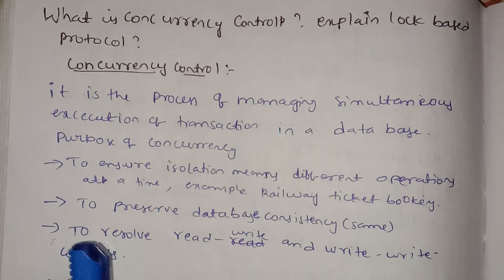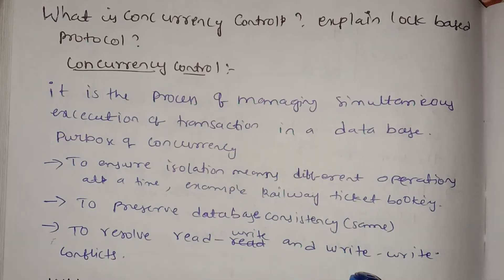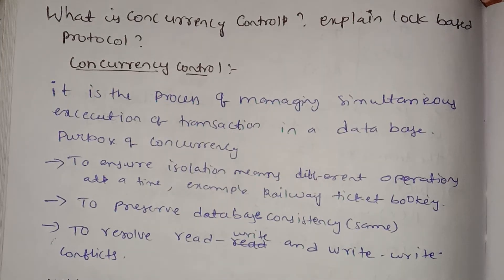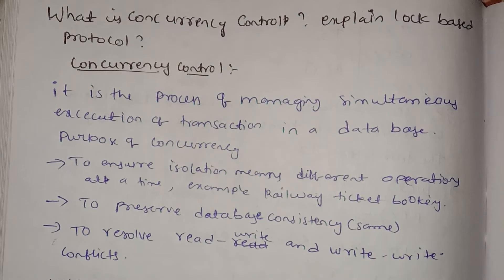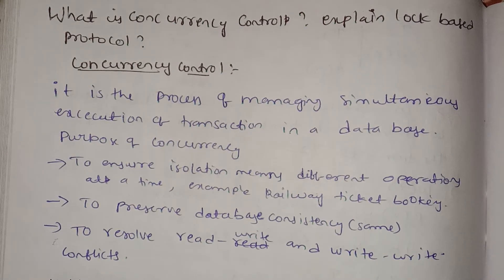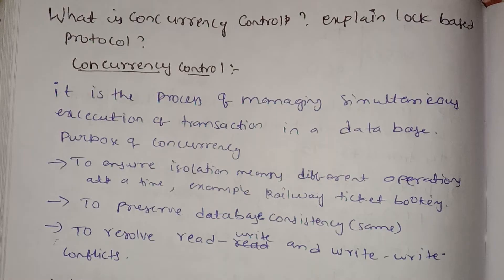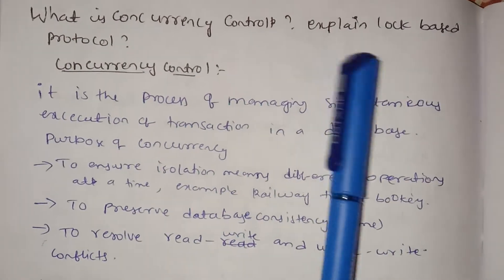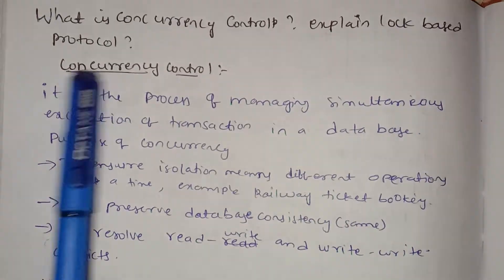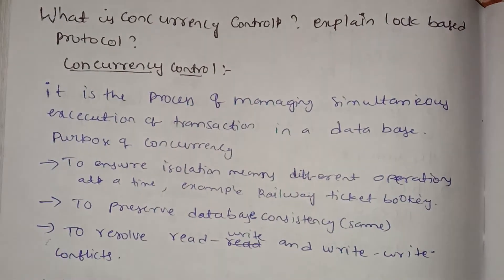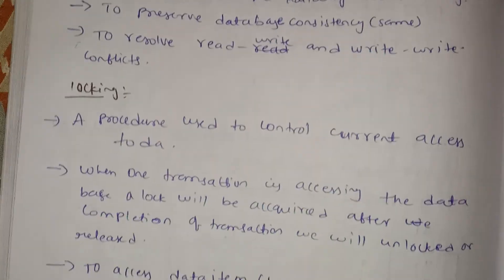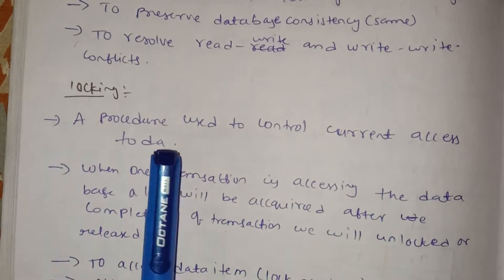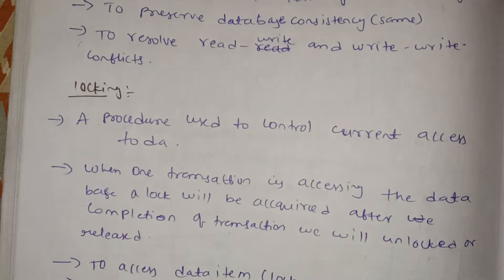To resolve the read-write conflicts — read-write, write-write, write-read — we will use this concurrency controller. In this concurrency controller, locking is used. First, we will explain the lock-based protocol. Locking is the procedure used to control the concurrent access of data.